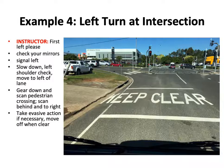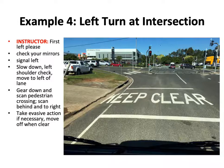Example four: left turn at intersection. First left, please. Check your mirrors, signal left, slow down, left shoulder check, move to the left of lane, gear down, scan the pedestrian crossing, scan to the right and also behind, and take evasive action if necessary and move off when clear.